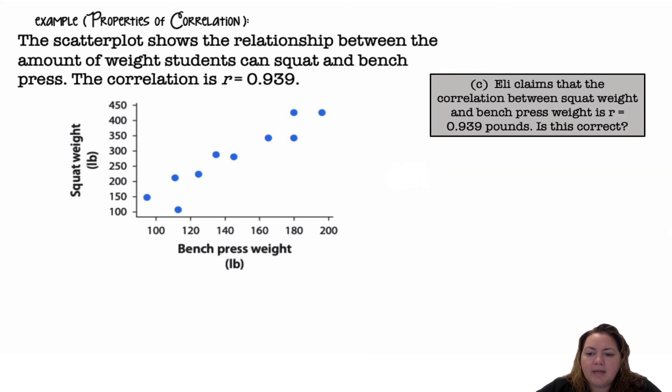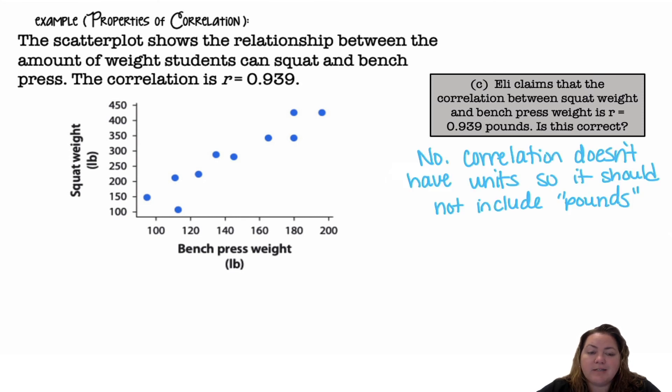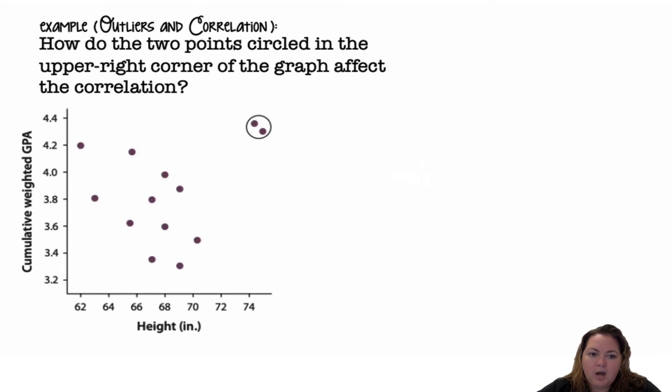Eli claims that the correlation between squat weight and bench press weight is 0.939 pounds. Is this correct? No, correlation doesn't have units, so it should not include the word pounds.